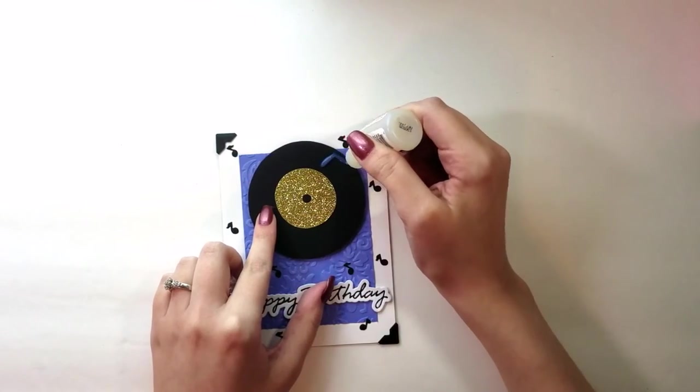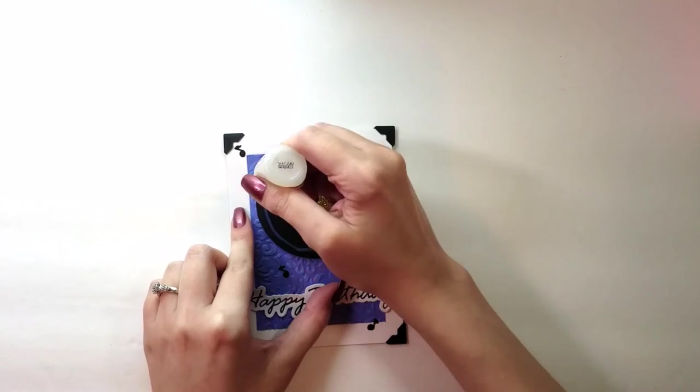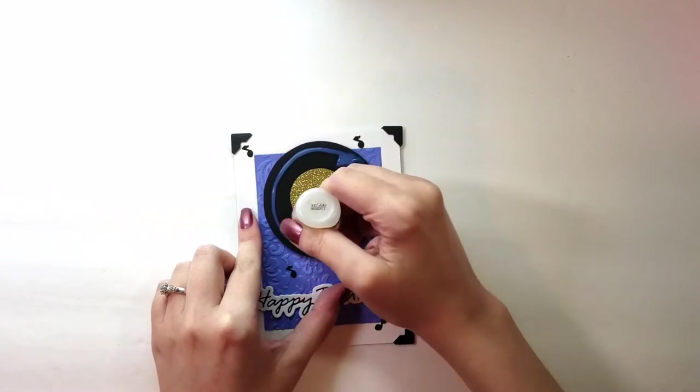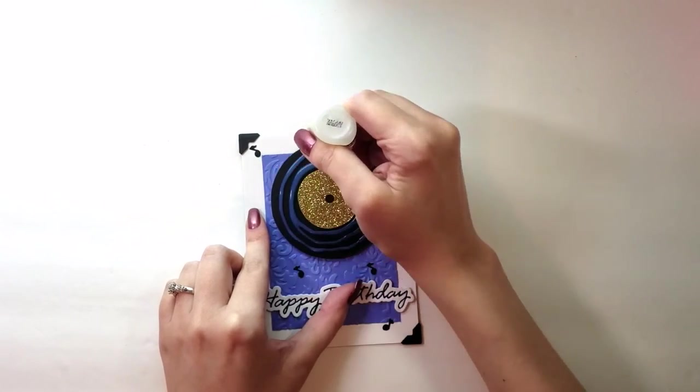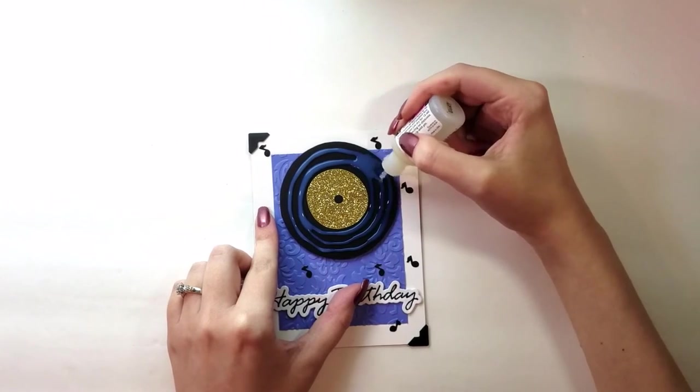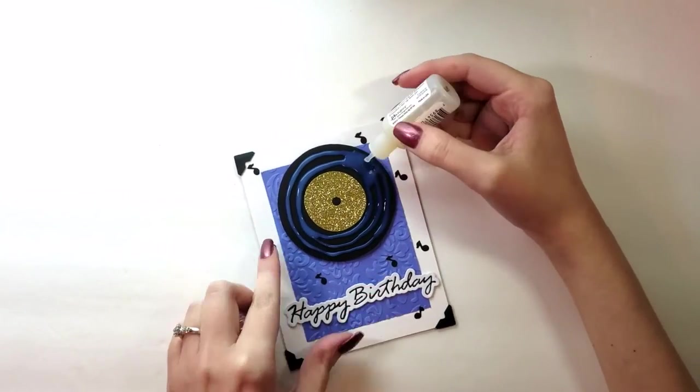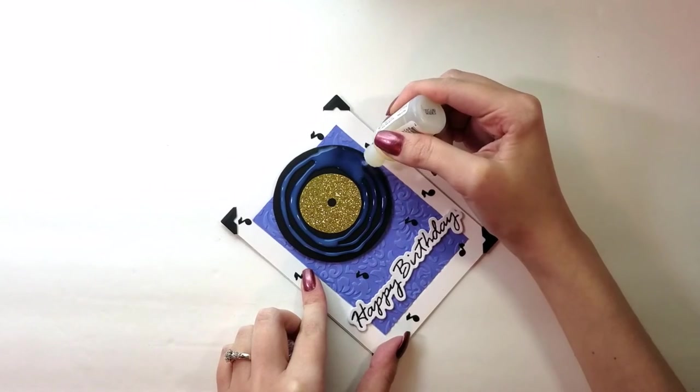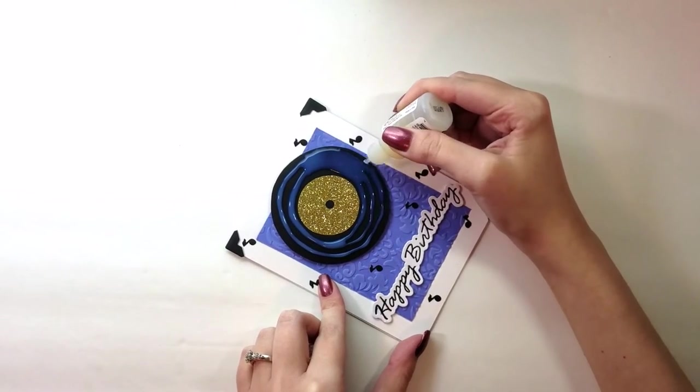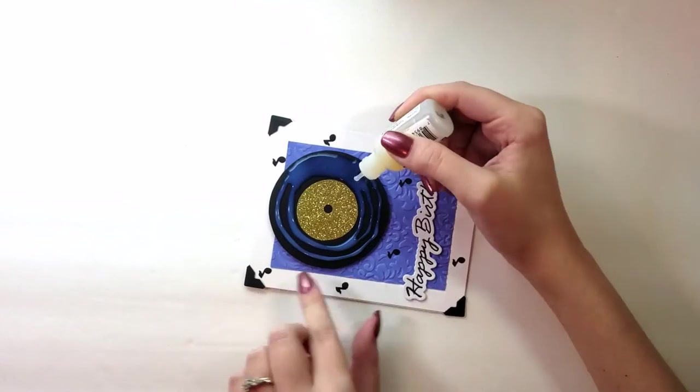Now, if I had to do this over again, I probably would have added the glossy accents before I adhered the record down with the foam squares. The reason I say that is because it did seem to warp just a little bit when it was up on the foam squares, rather than it drying flat.